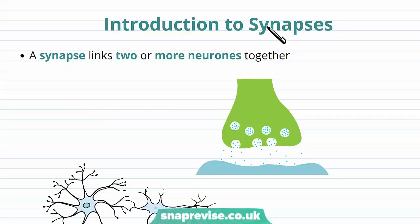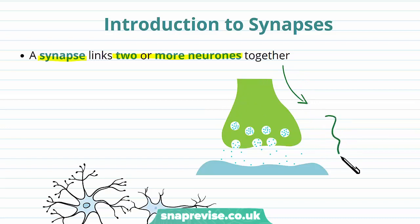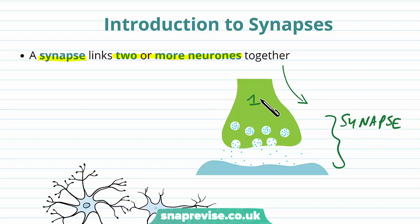A synapse is an important structure in the nervous system. When you see a synapse, it's where we link two or more neurons together. The body is made up of lots of different neurons, and because they're carrying communication, they need to be able to bridge to each other, and the way that they bridge this is at a synapse — a junction between one neuron and the second neuron.